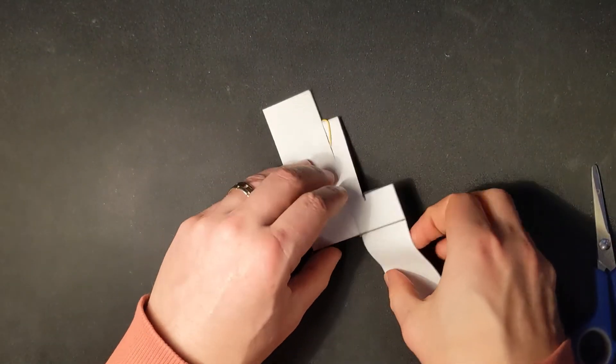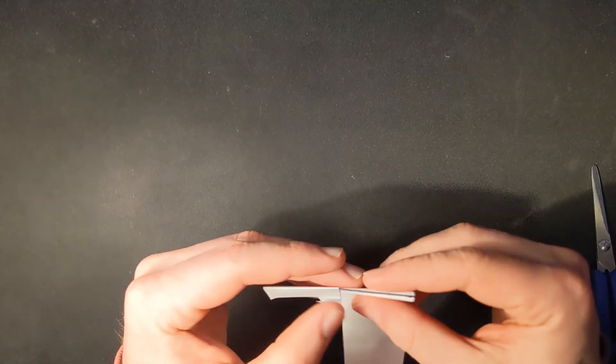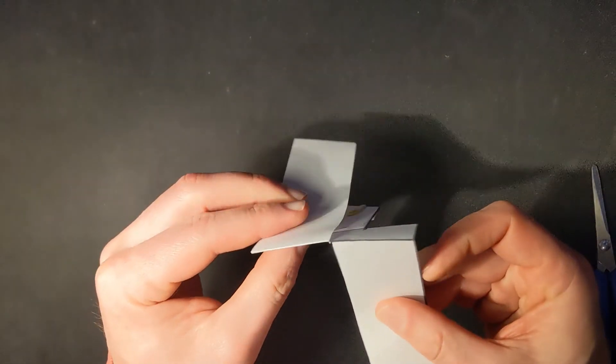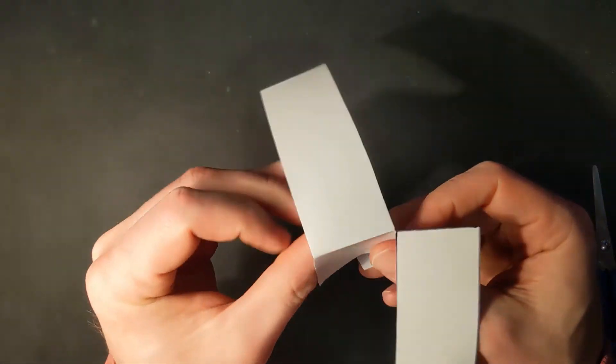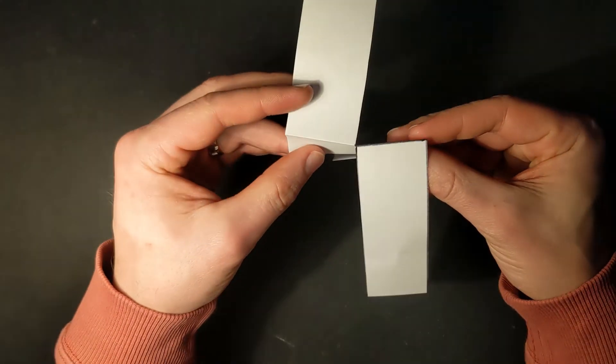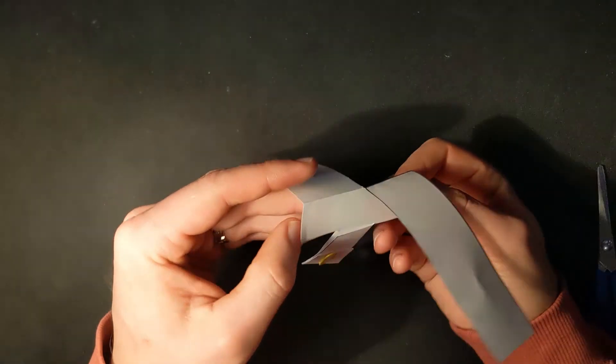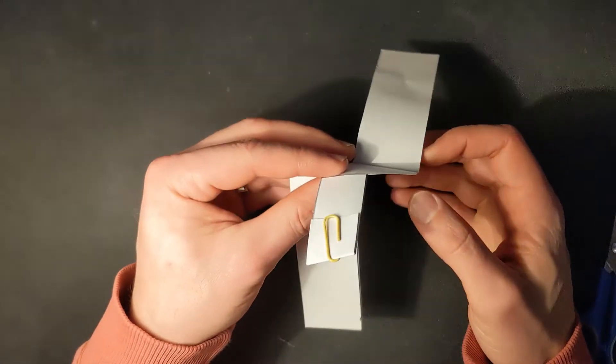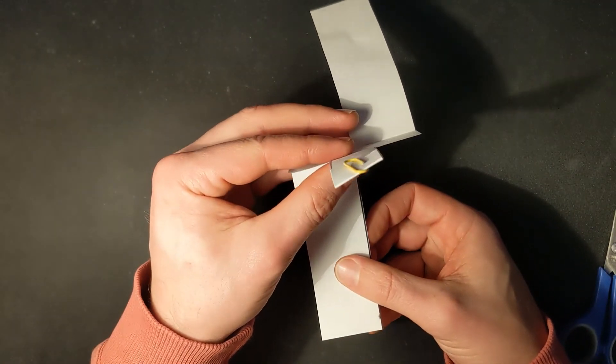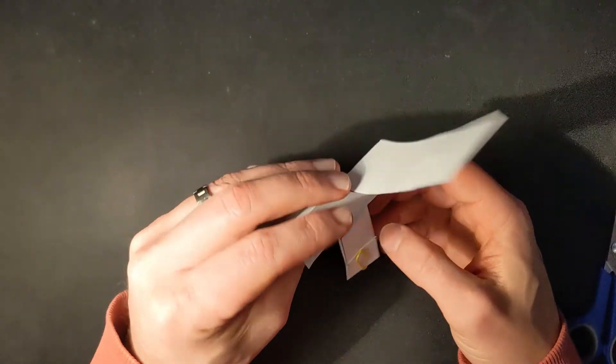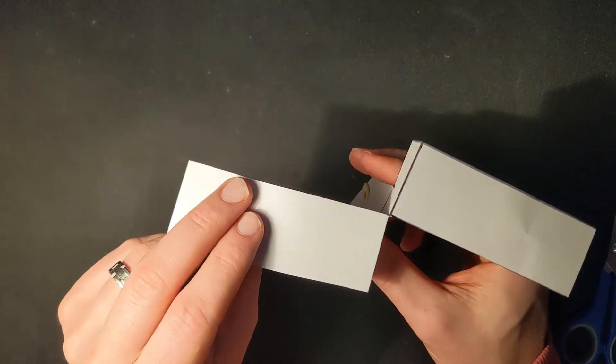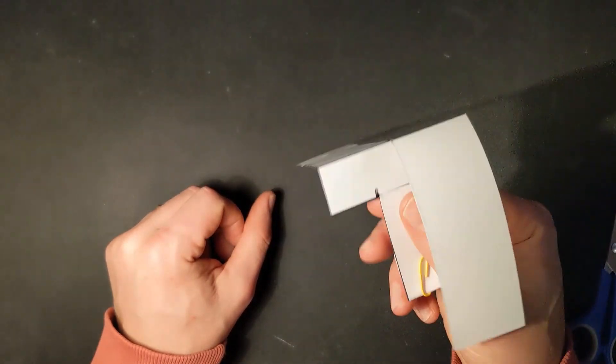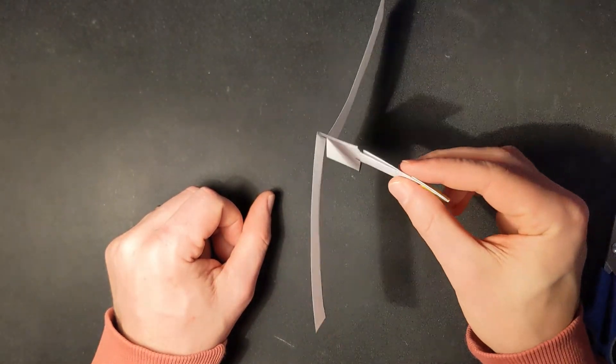One is going to go this way. And the other one is going to go like this. So looking at the top, this is what I've got. Here it is from the side. Here it is from the bottom. And if you drop this, it should twist as it falls. All right, that's the tutorial. That's how to make a rotocopter. Hopefully that helps.